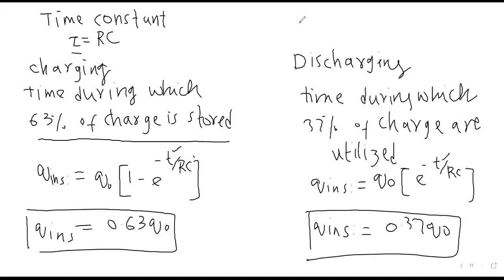Discharging کے لیے instantaneous charge: q = q₀ × e^(−t/RC)۔ t = RC پر q = 0.37q₀ یعنی 37% charge بچتی ہے۔ یاد رکھیں: charging کے لیے 63% اور discharging کے لیے 37%۔